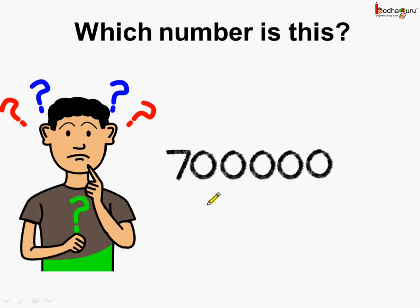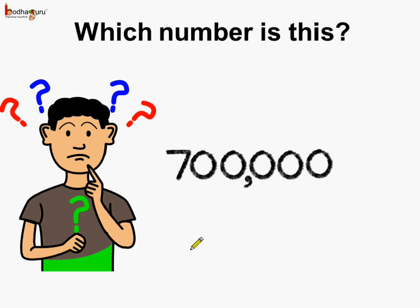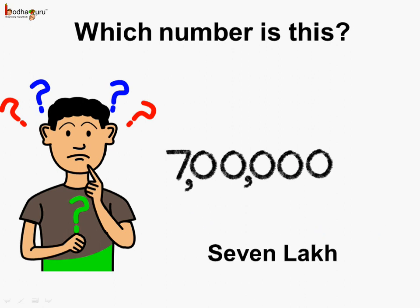Next, which number is this? Let's start putting commas by figuring out the different periods, starting from the rightmost side. The 3 rightmost digit places form the units period — put a comma here. Then after the units period we have the thousands period, which consists of 2 digits — put a comma here. So we have the units place, then the thousands, and now we can see there are 7 lakhs.